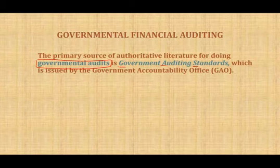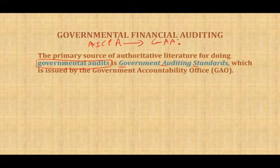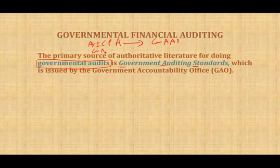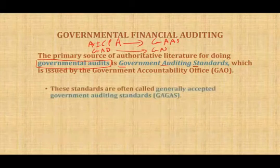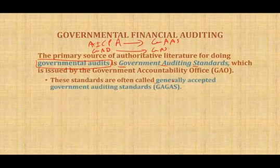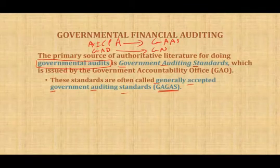For a private company, the AICPA is the organization that issues the rules, and those rules are called GAAS, Generally Accepted Auditing Standard. For the government, instead of the AICPA, we have the GAO. If it's a publicly traded company, they follow the PCAOB — that's different. The governmental standards are often called Generally Accepted Government Auditing Standard, or GAGAS. So GAGAS is the same thing as GAS.